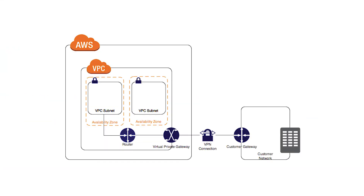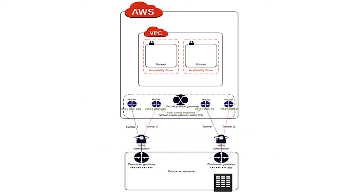VPC gateways are highly available, but you can also create multiple customer gateways and then create multiple tunnels from your VPC gateway to various customer gateways for higher availability on the customer side. This gives you a redundant connection — the same VPC gateway can be connected to multiple customer gateways. During maintenance, one customer gateway can go offline while the other remains active. For high availability, you should create redundant VPN connections between your corporate network and your VPC cloud.